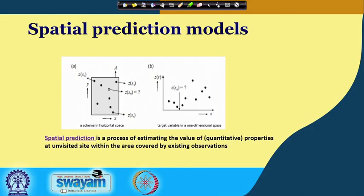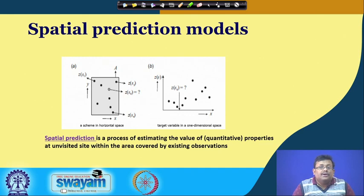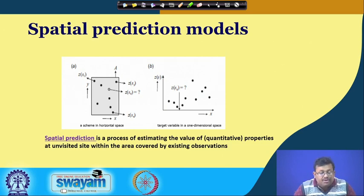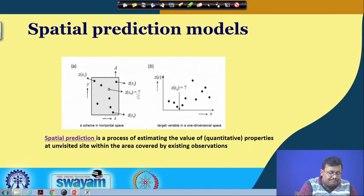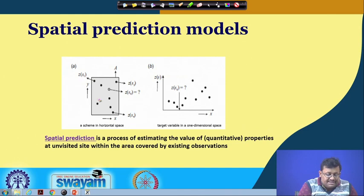In the last lecture we stopped while talking about the spatial prediction model. Remember that spatial prediction is a process of estimating the value or quantity of properties at unvisited sites within the area covered by existing observations. This is our area of interest, shown in horizontal space, with observations denoted by Zs1, Zs2, and Zsn, and we want to predict the value at unobserved point Zs0.